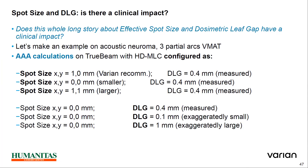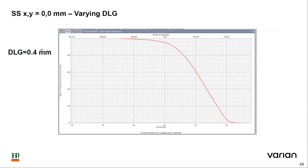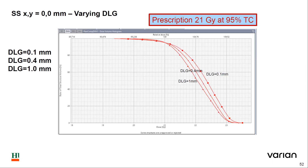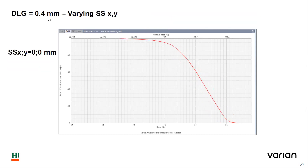What is the clinical impact? Does this whole discussion about effective spot size and dosimetric leaf gap have a clinical impact? Let's make an example: an acoustic neuroma, three partial arcs with TrueBeam and HD-MLC configured. DLG is varied for the MLC while spot size is fixed. The mid-range DLG is 0.4 mm, with values of 1 mm and 0.1 mm tested. We can see how the dose distribution is affected by varying DLG and spot size.